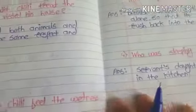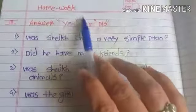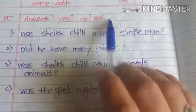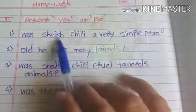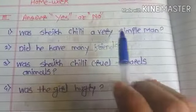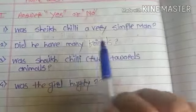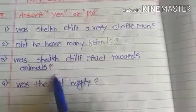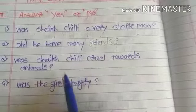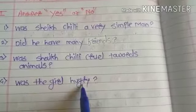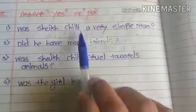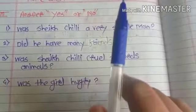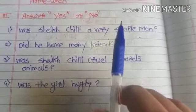This is all about the exercise of Sheikh Chilli. Now your homework: you have to write yes or no answers. Was Sheikh Chilli a simple man? Was Sheikh Chilli cruel towards the animals? Was the girl hungry? You have to write yes or no answers. Today we stop here.